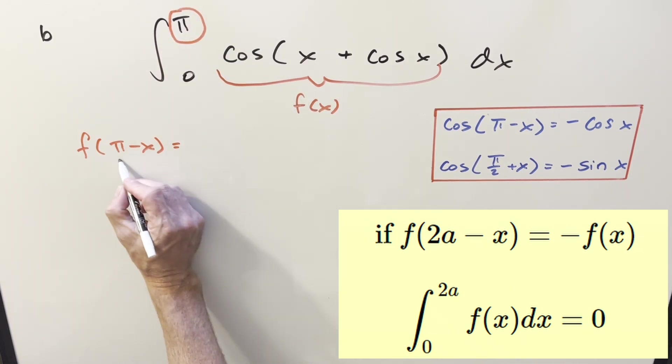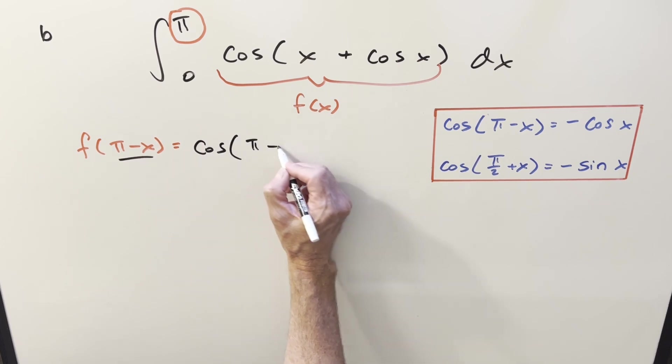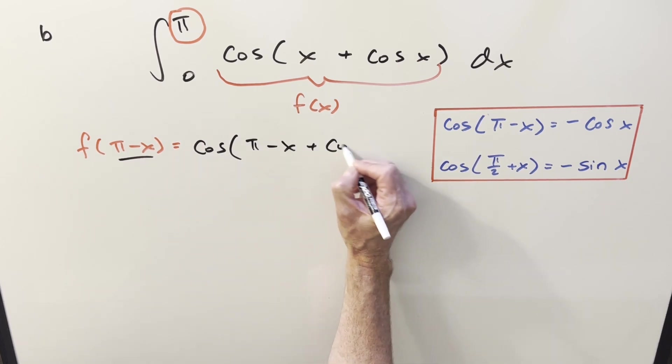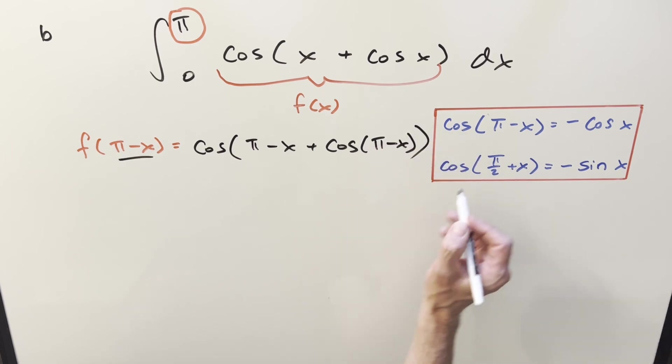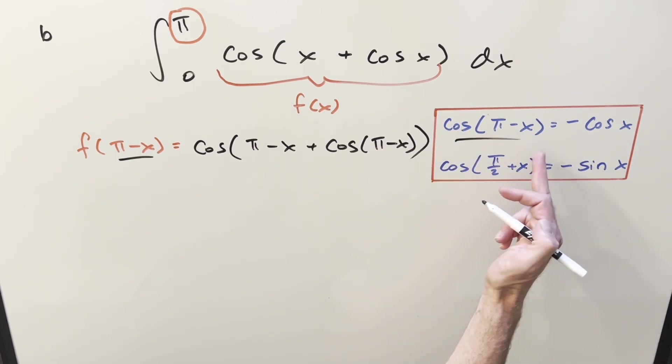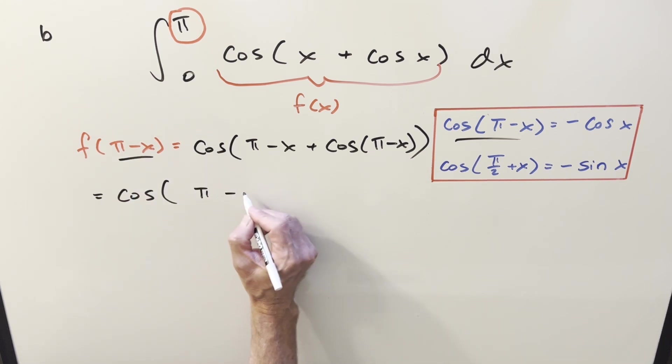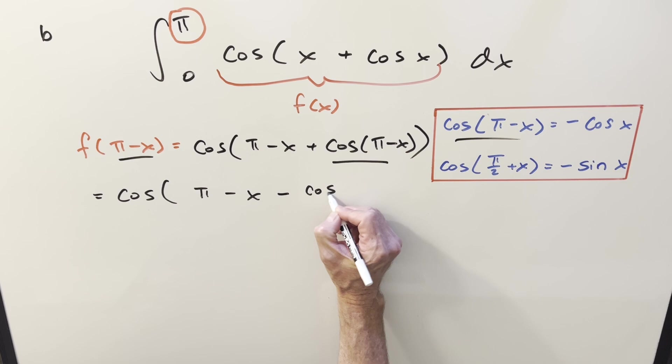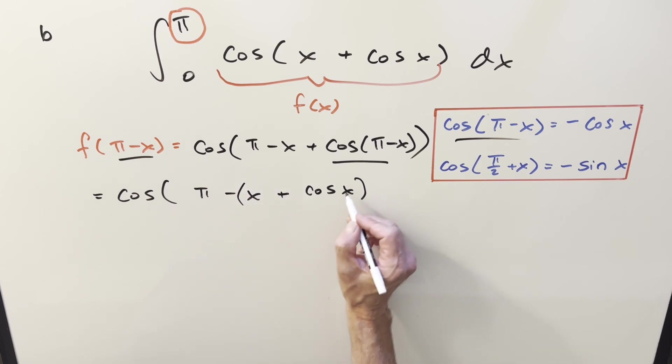So all we're going to do is just plug into our function here. So doing it out, we're going to have cosine of π minus x plus cosine of π minus x. And that's where we can use our first identity, this thing right here. So then doing it carefully, what's going to happen is this is going to transform to a minus cosine x. But then to clean this up, we got minus and minus. Let's factor out a minus and write it this way.